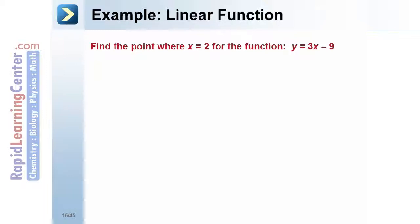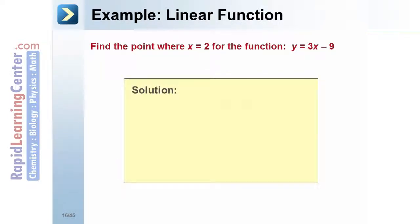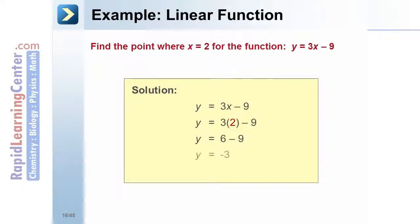Example — linear function: find the point where x equals 2 for the function y equals 3x minus 9. Solution: replace x with 2 to get y equals 3 times 2 minus 9. Solve for y: y equals 6 minus 9, so y equals negative 3. Therefore, the point where x equals 2 is (2, negative 3).